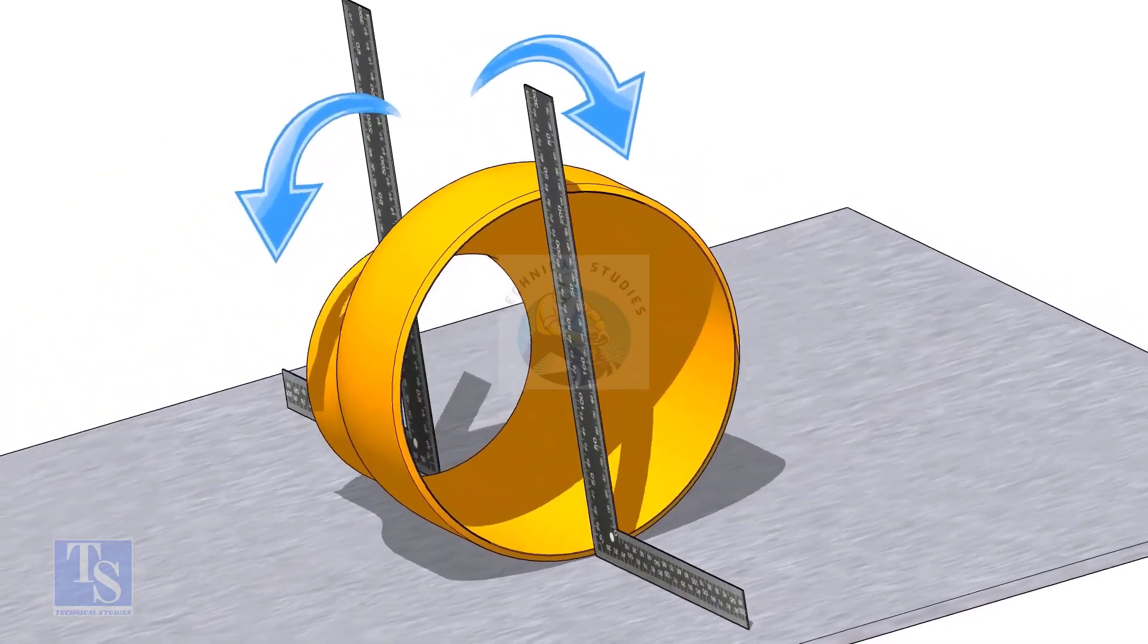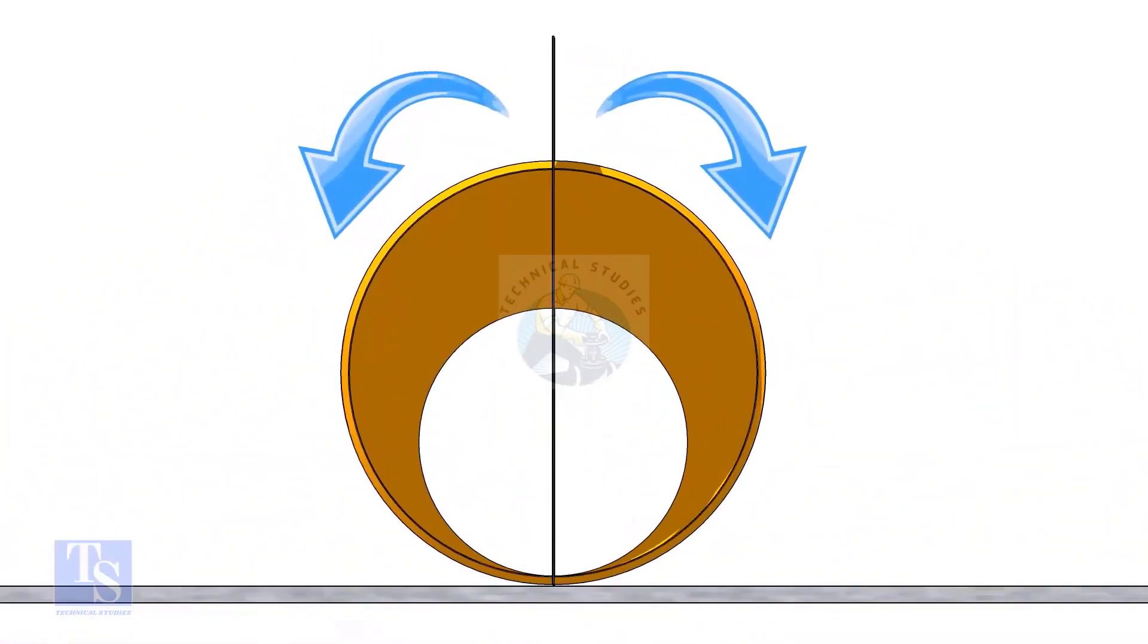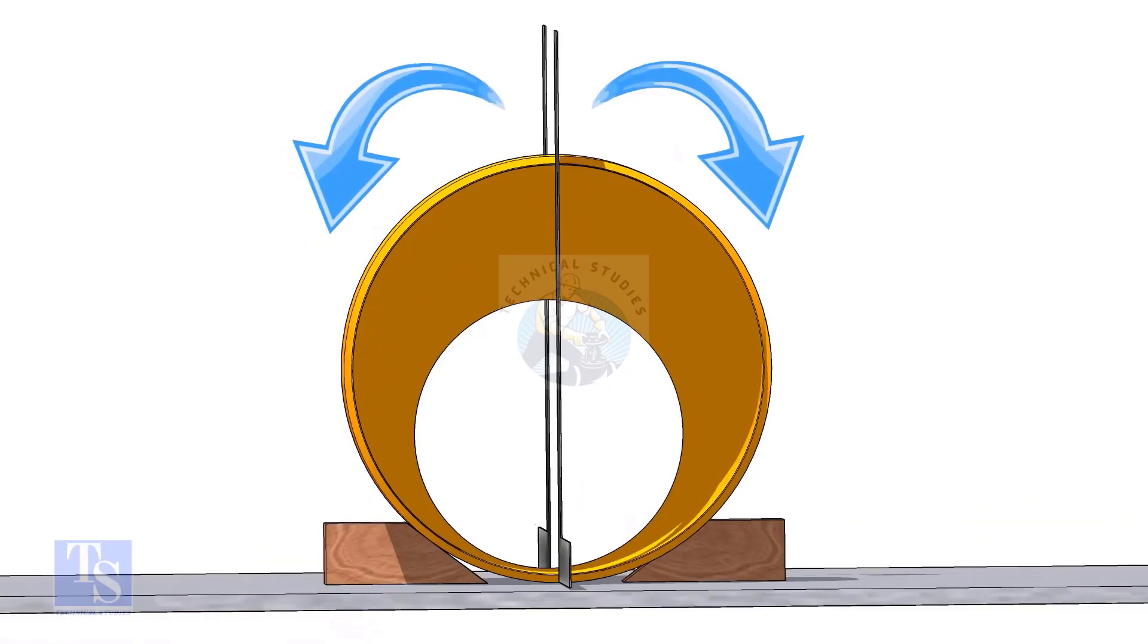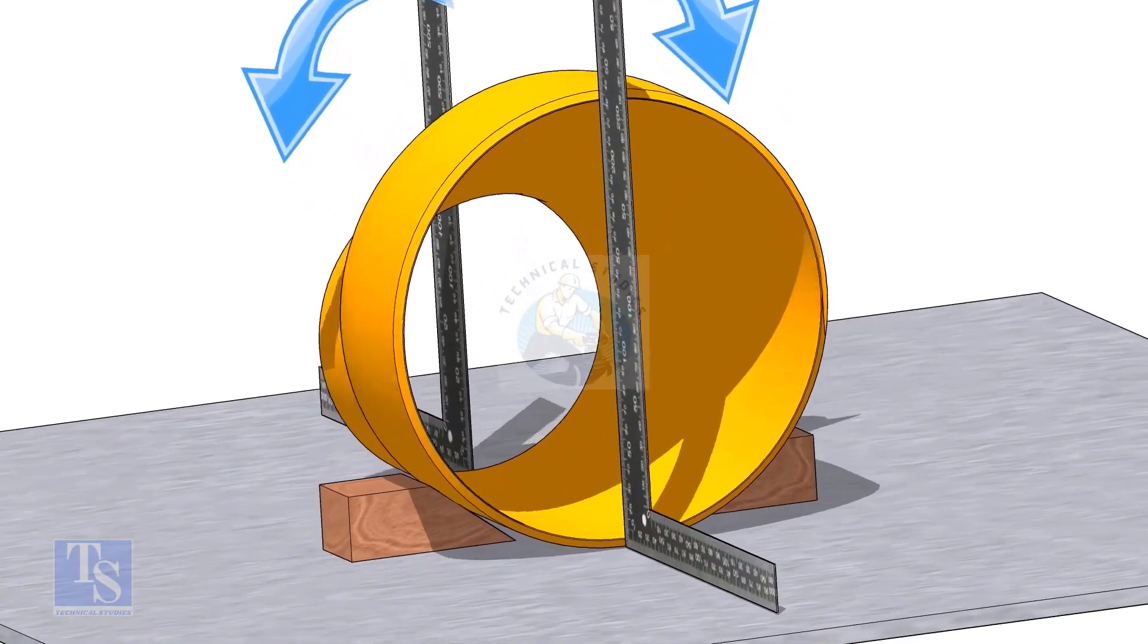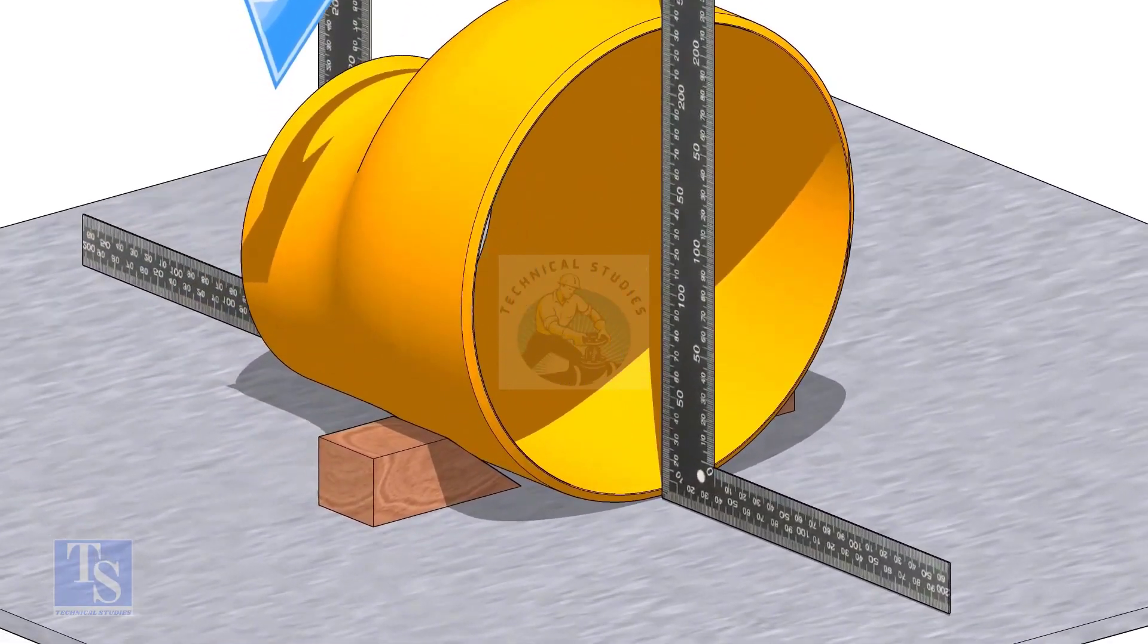You will see at some points the reducer touches the right angle at the top and at the bottom. This means that now the reducer sits on its straight side.